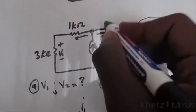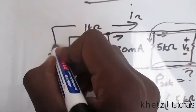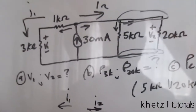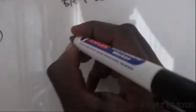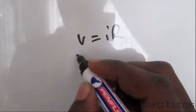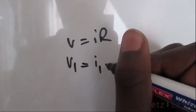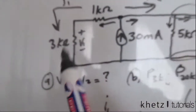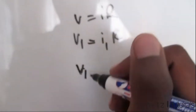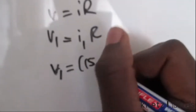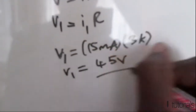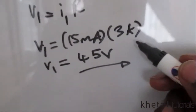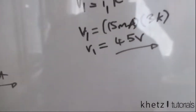i2 goes one way and i1 goes the other way. i1 goes through the positive terminal of V1 first, so using Ohm's law — V = IR — we get V1 = i1 × R. i1 is 15 milliamperes and R is 3k ohms, so V1 = 15 mA × 3k = 45 volts. The milli and k cancel out, and 3 × 15 = 45.